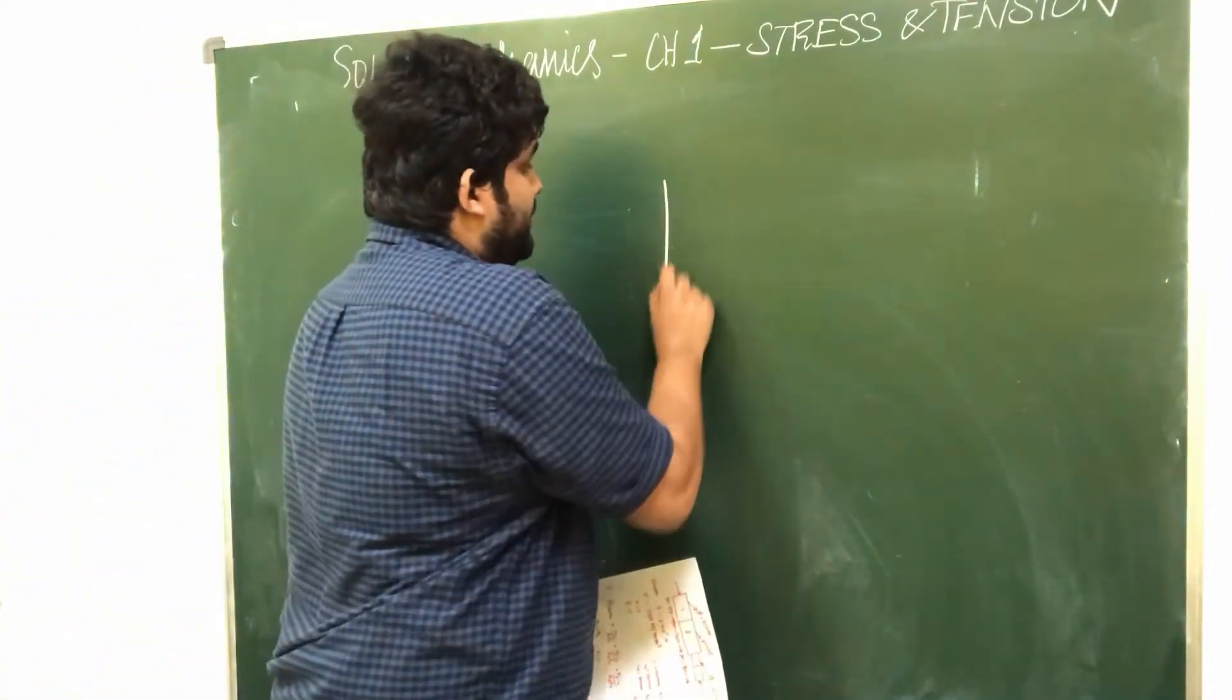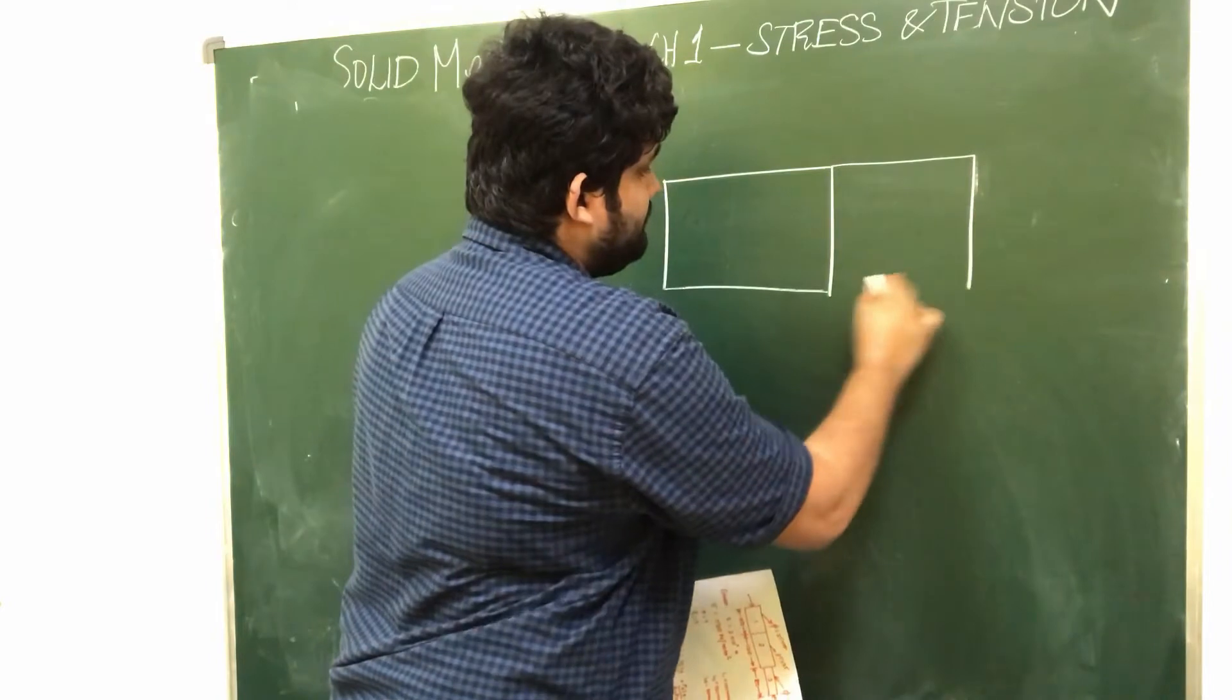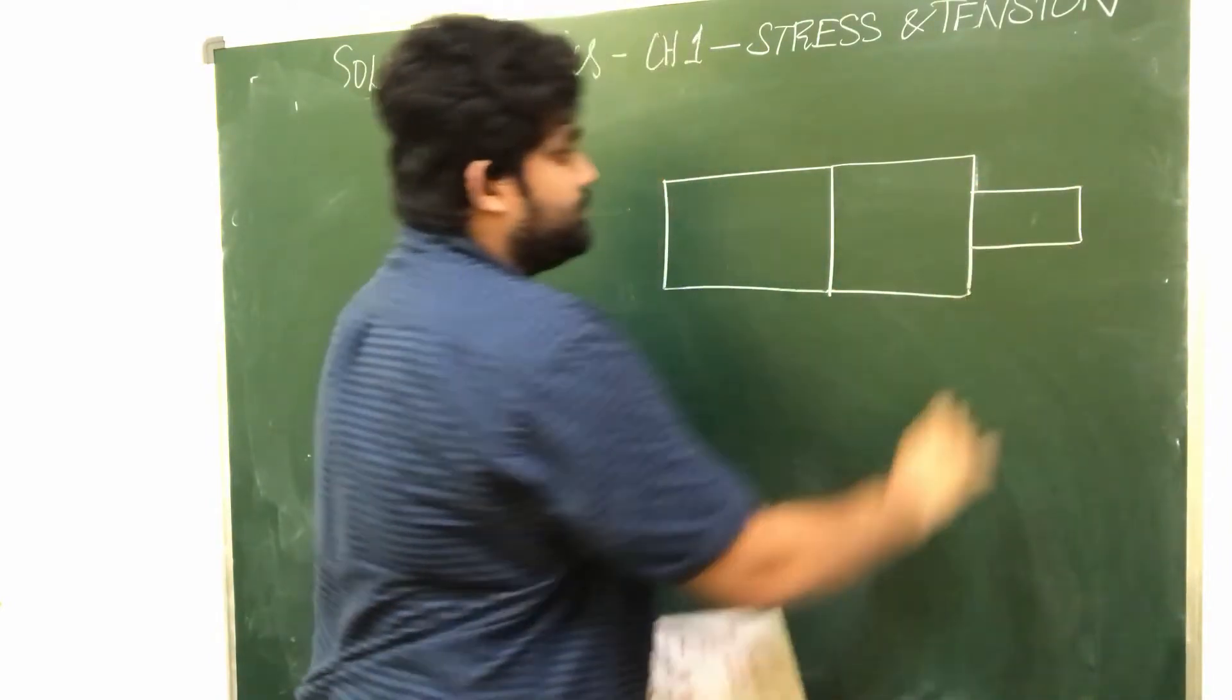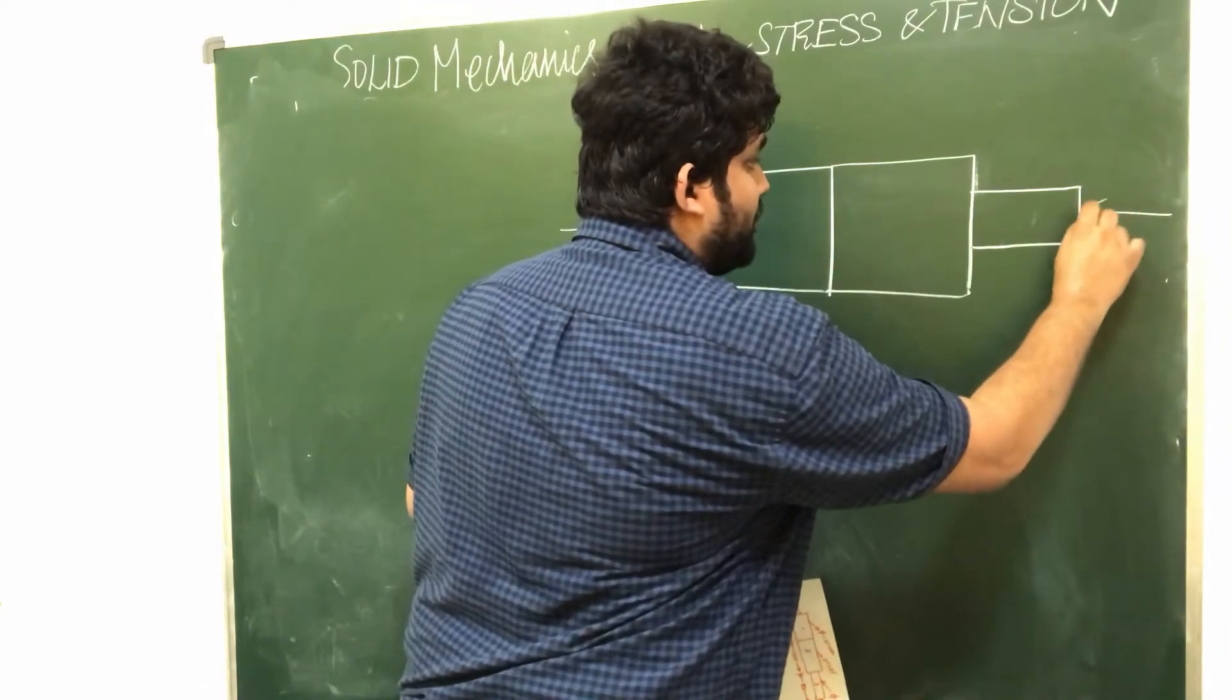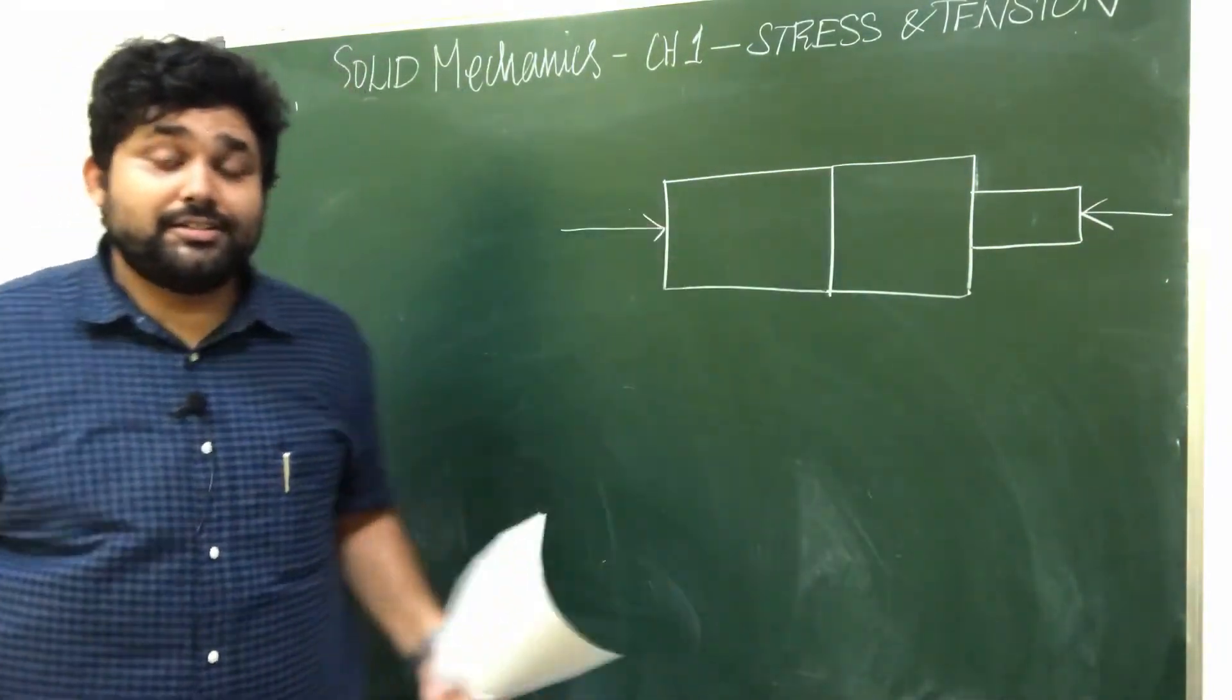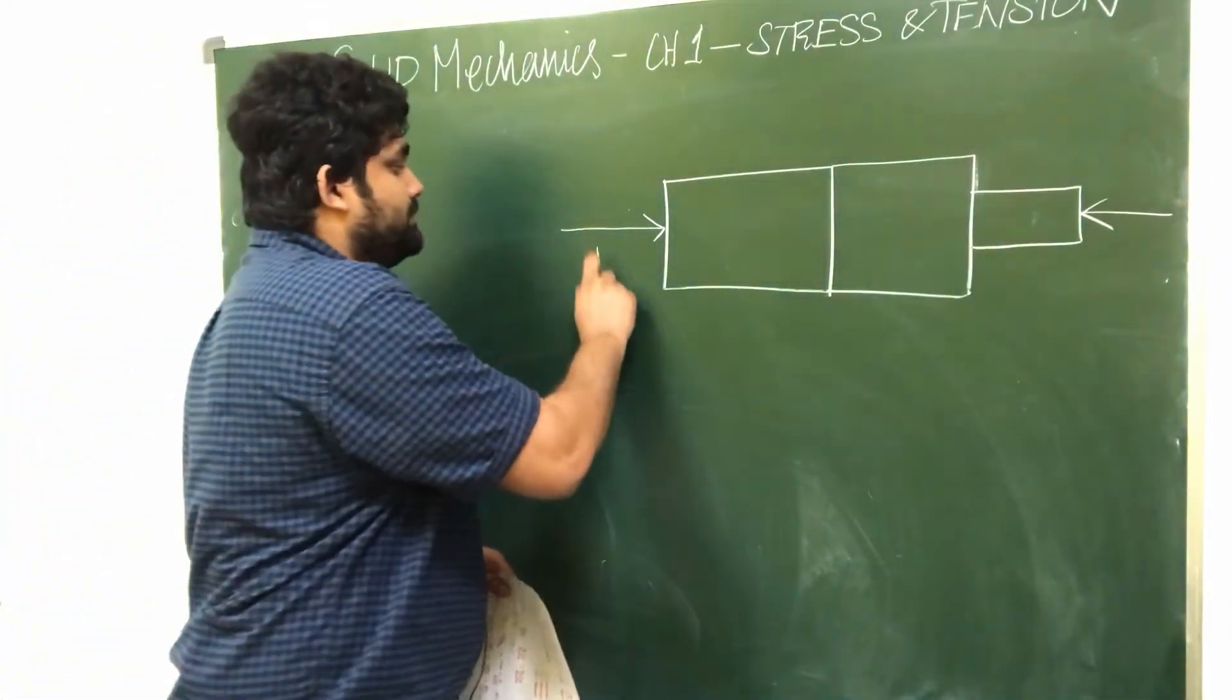The question is, in the bar 3 bar. Here is the axial compressive load, so axial tensile load and pulling load and axial compressive load. The direction of the load is here, so the load is P.